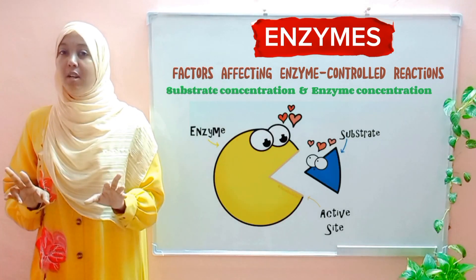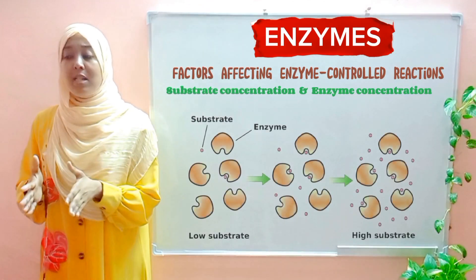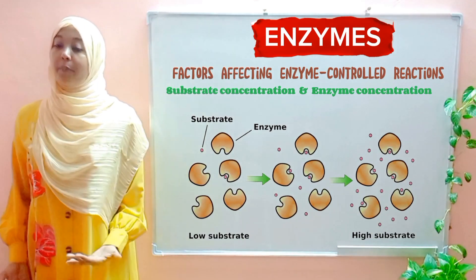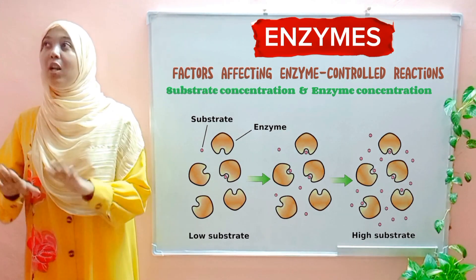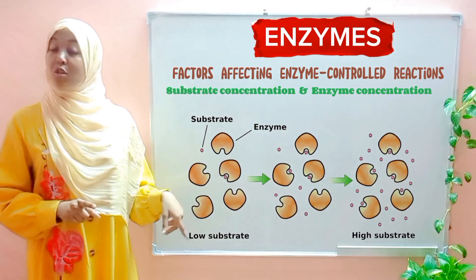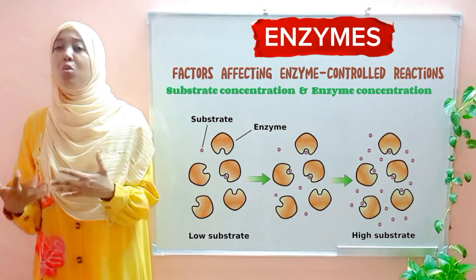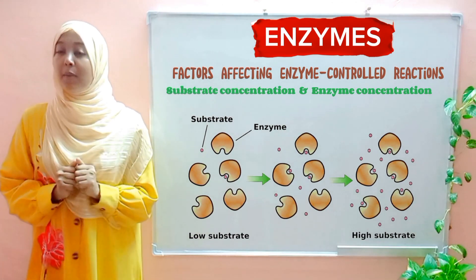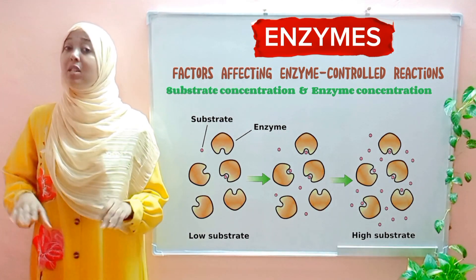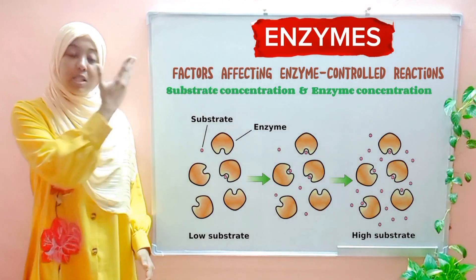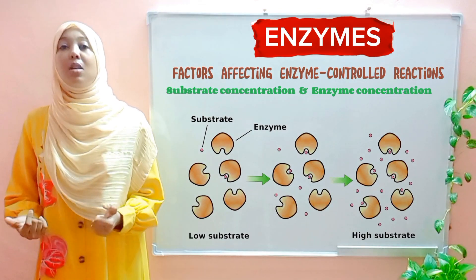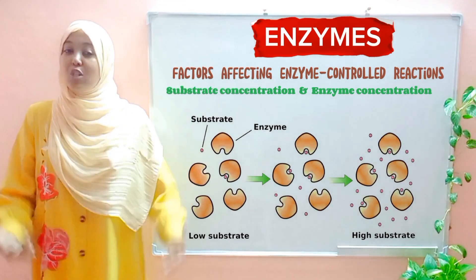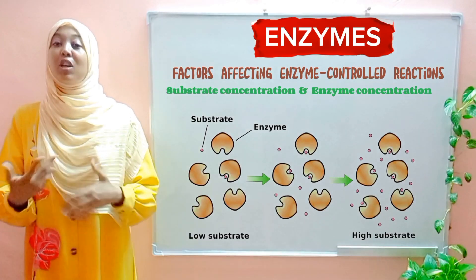These two factors go hand in hand. For example, consider enzyme maltase and substrate maltose. If enzyme concentration is high but substrate concentration is low, the rate of reaction will initially be very fast because there are more enzymes than substrate, so catalysis occurs quickly. However, it will reach a point where the reaction slows down and stops because all substrate molecules have been catalyzed. Increasing substrate concentration will speed up the rate of reaction again.